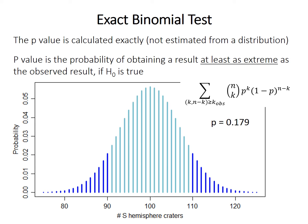We can calculate an exact p-value from the binomial distribution by adding up the probabilities of all outcomes at least as extreme as our observation. So we find the probability of 110, 111, 112, 113, and so on, and add them up. Note that as in many previous tests, we look at both tails — not just 110 and above, but also 90, 89, 88, and so forth — because we're testing the probability of finding at least 110 craters in either hemisphere.